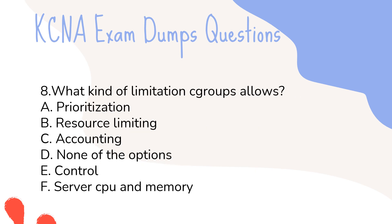Question 8: What kinds of limitations do cgroups allow? A. Prioritization. B. Resource limiting. C. Accounting. D. None of the options. E. Control. F. Server CPU and memory.